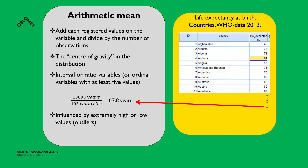The arithmetic mean is influenced by extremely high or extremely low values, so-called outliers. For life expectancy this is not a huge problem, but consider an income distribution where someone earning a billion dollars would pull up the mean quite a lot. So the mean is sensitive to outliers.